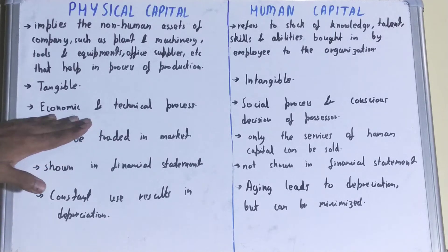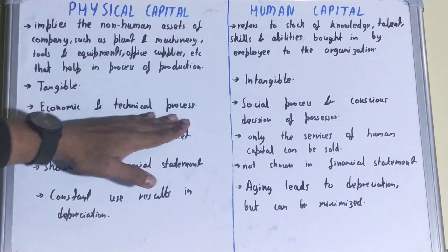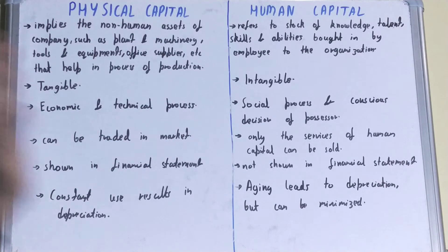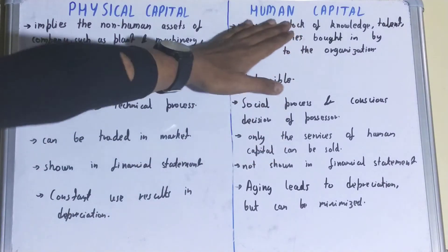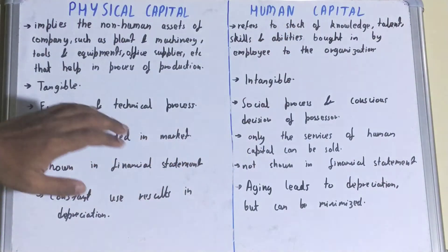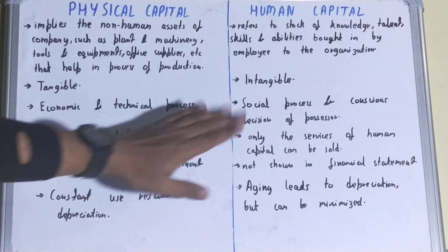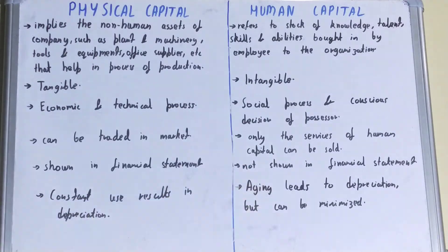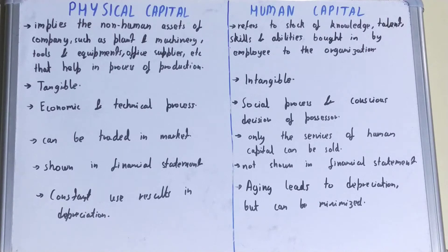Next, if we talk about the formation, physical capital is important for the formation of economic and technical processes, but human capital is important for the formation of social processes and conscious decision of the possessor.